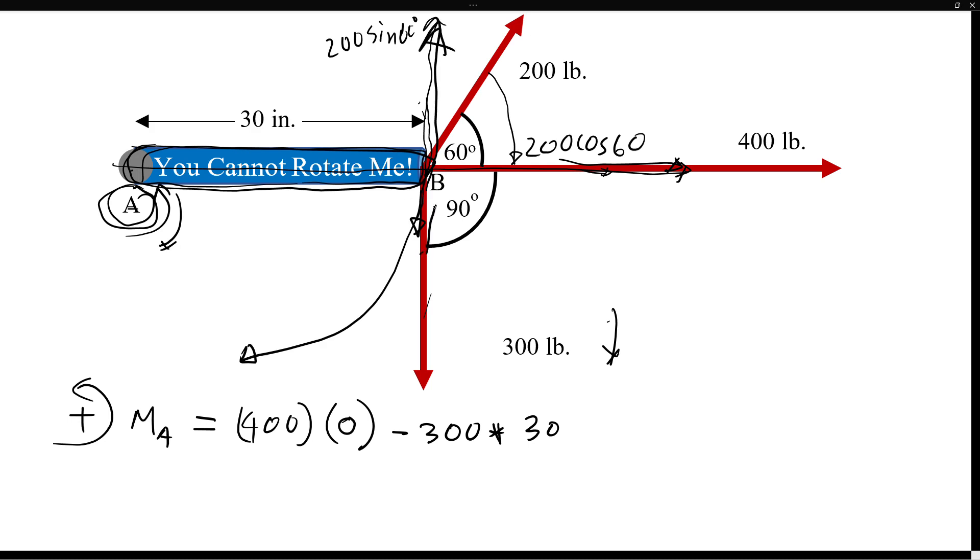For the 200 sine 60, that's going to do a counterclockwise moment. It's going to push this point at point B so it will try to make a counterclockwise moment like this. So that is a positive moment: 200 sine 60 degree, that's the force component perpendicular, times the distance. 30 inches is the shortest distance.